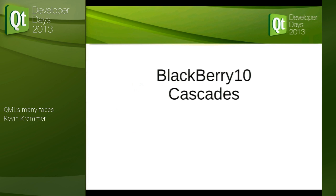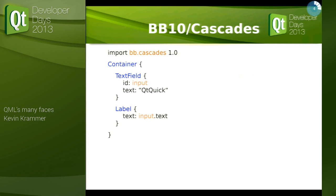Another use case is BlackBerry 10 Cascades — a Qt4 implementation that does its own rendering, but it's a lot like QtQuick 2. It looks very similar: we have an import — a different import, a different object system — but the same structure. We have elements, we have properties, we can identify elements, we can bind properties together. This was the first widely used application of QML outside of QtQuick.